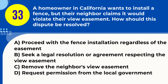Question 33. A homeowner in California wants to install a fence, but their neighbor claims it would violate their view easement. How should this dispute be resolved? A. Proceed with the fence installation regardless of the easement. B. Seek a legal resolution or agreement respecting the view easement. C. Remove the neighbor's view easement. D. Request permission from the local government. Answer: B. Seek a legal resolution or agreement respecting the view easement. Explanation: In California, disputes over easements should be resolved legally or through mutual agreement, respecting the rights established by the easement.